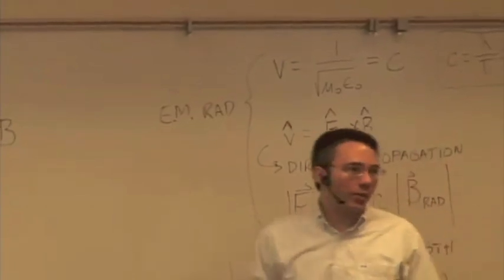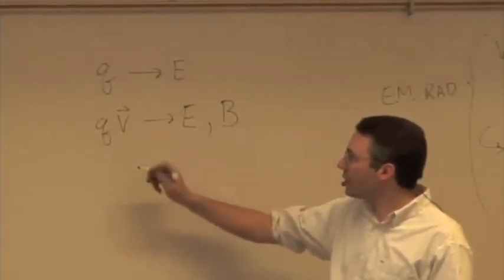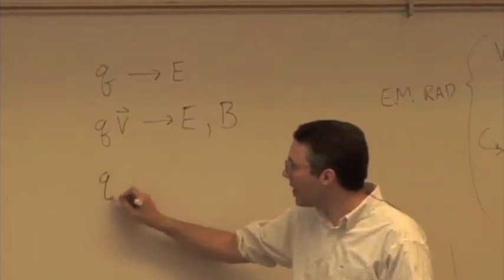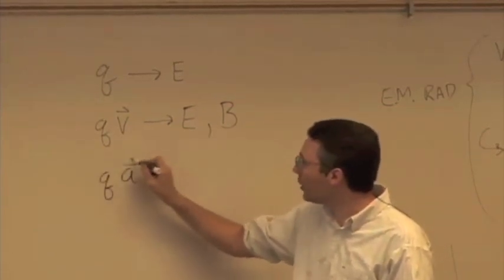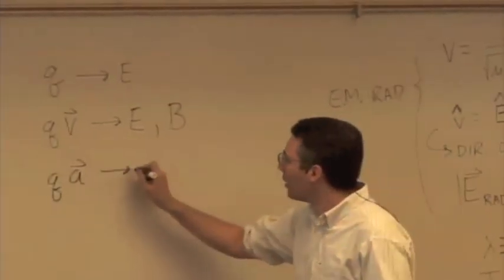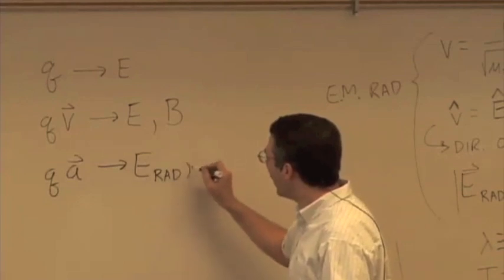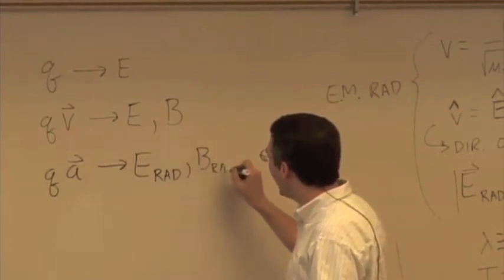Well, the new wrinkle now is that not just having a charge, not just the fact that the charge is moving, but the charge has to actually accelerate. That means the velocity has to change. Accelerated charges produce radiative electric and magnetic fields.